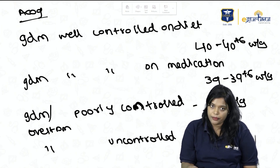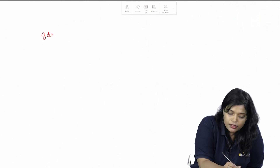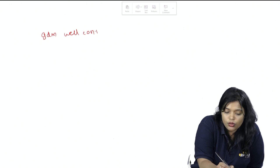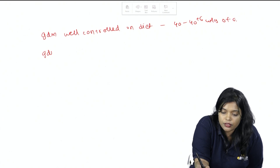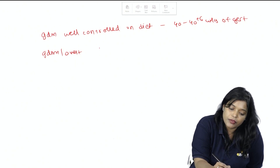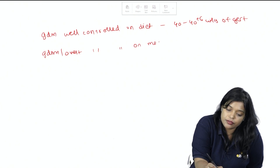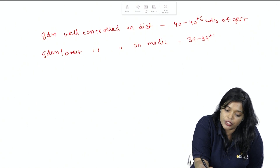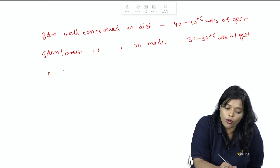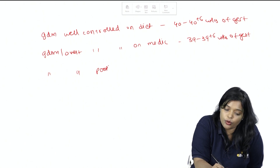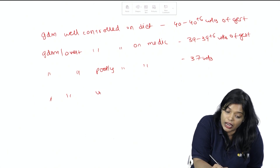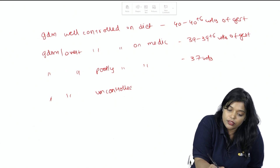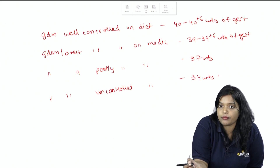Regarding timing of delivery: GDM well-controlled on diet — deliver by 40 to 40+6 weeks. GDM or Overt DM well-controlled on medication — 39 to 39+6 weeks. GDM or Overt DM poorly controlled on medication — 37 weeks. GDM or Overt DM uncontrolled on medication — deliver by 34 weeks.